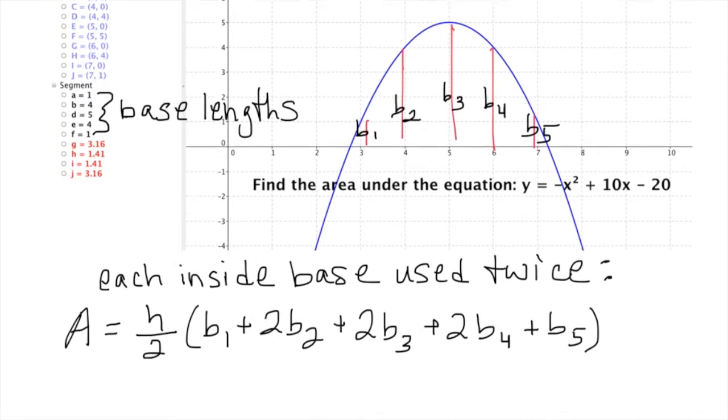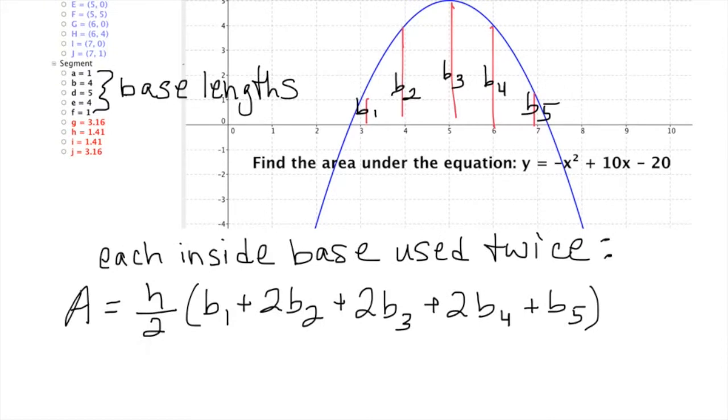So at this point we can start substituting in some values that we know. We know that the height is 1, that's the width of each of those intervals, 3 to 4, 4 to 5, 5 to 6, and so on. So it's 1 half outside the parentheses, and then we can go ahead and put in the base lengths that we know. So 1 plus 2 times 4 is the height of base 2, plus 2 times 5, plus 2 times 4, plus back to 1.